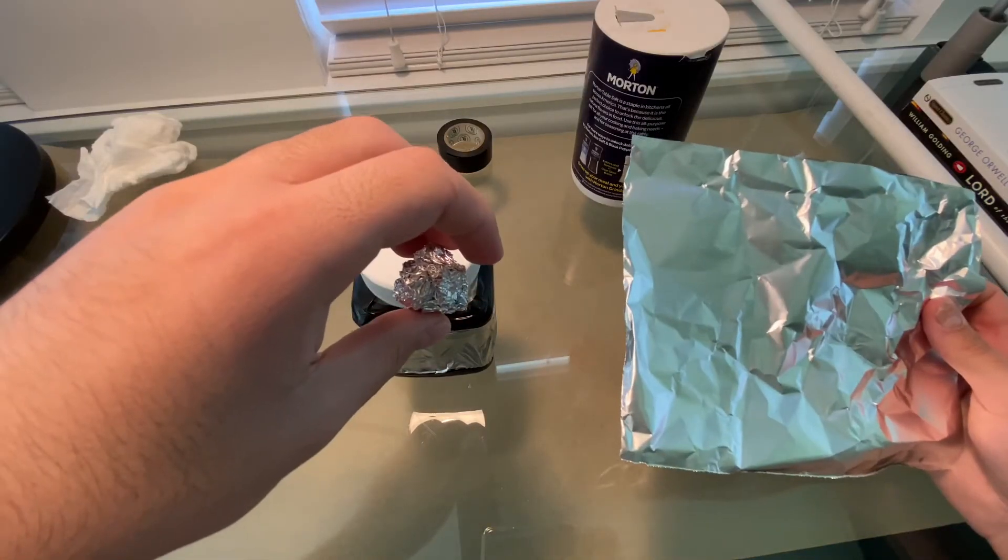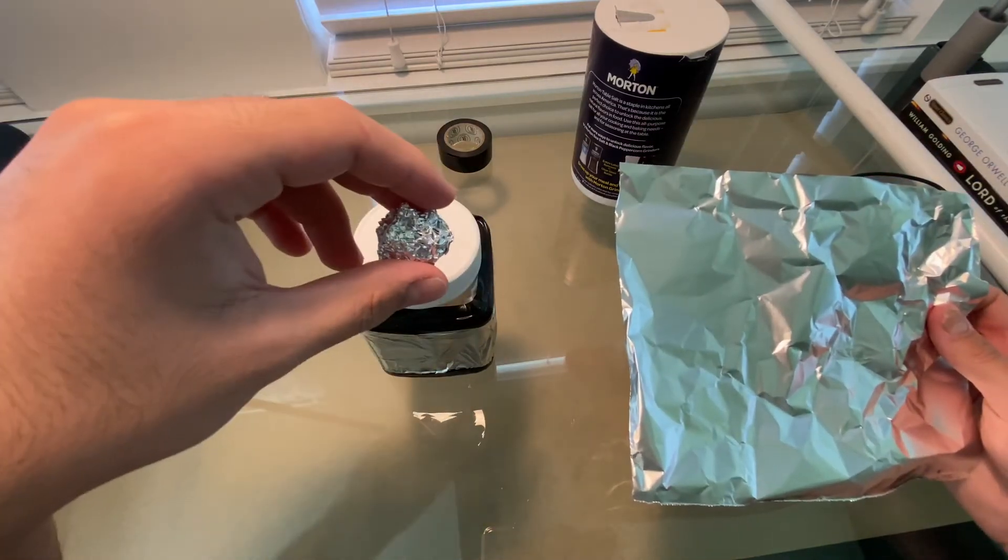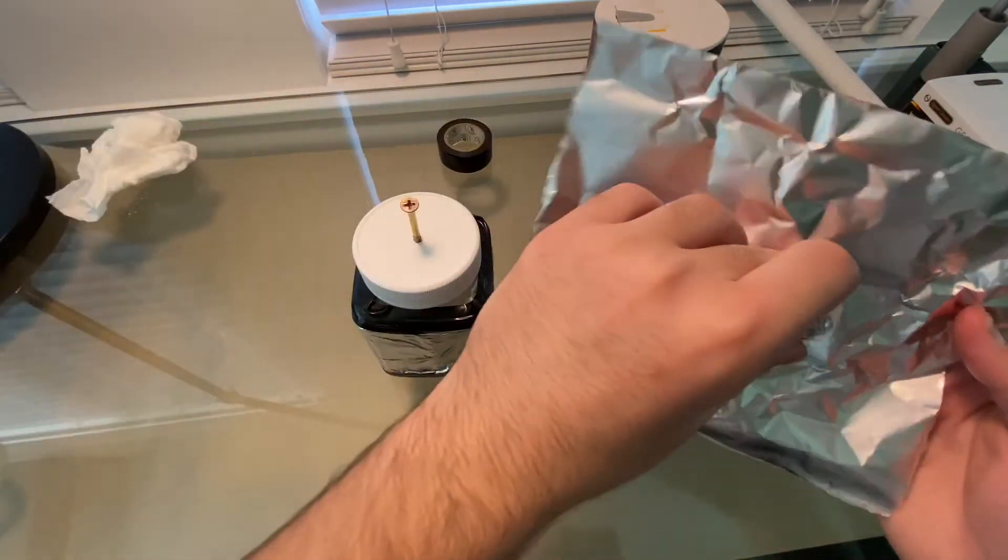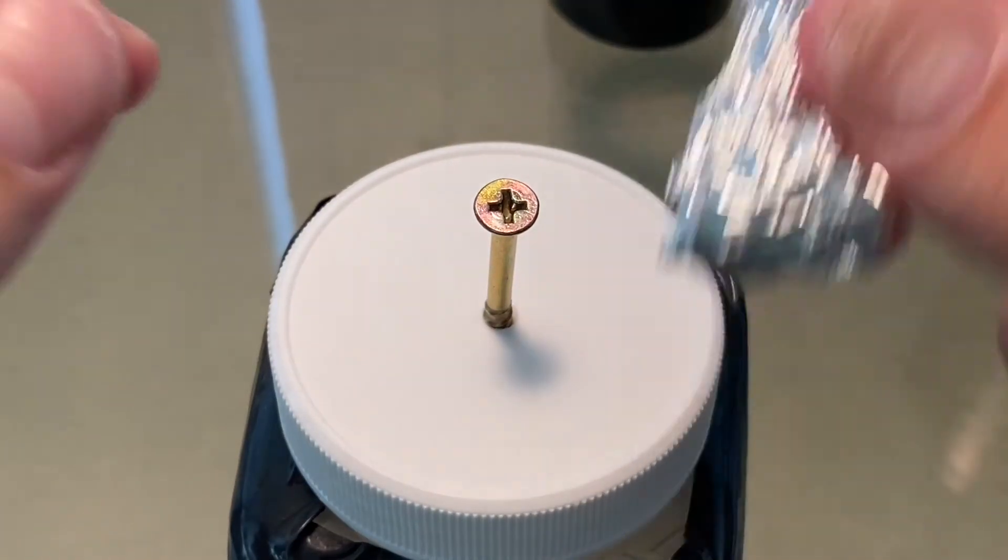So I took our scrap piece of aluminum, I split it in half. One half I crumpled up, the other half I'm just going to wrap it around this ball. It should look like this.